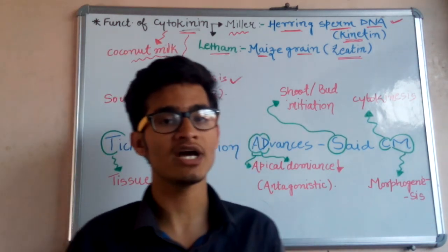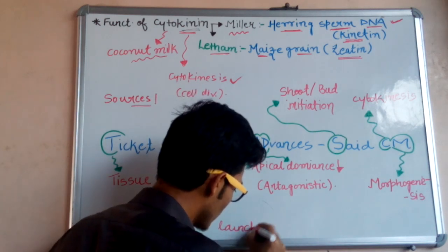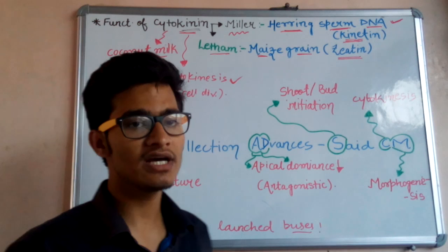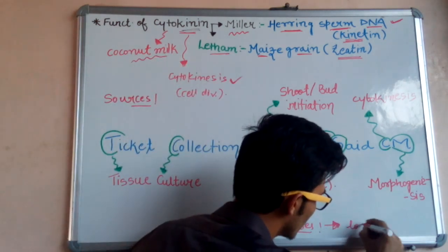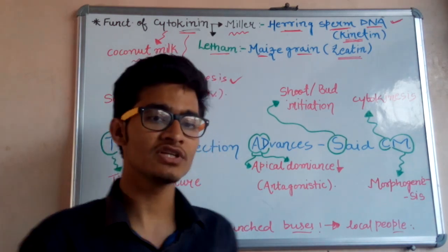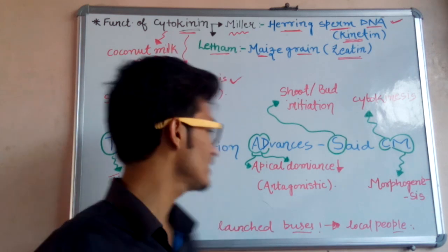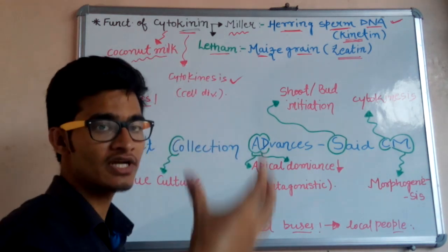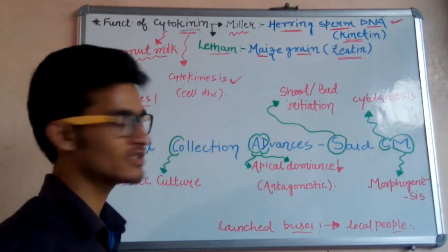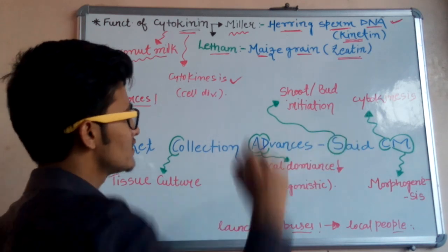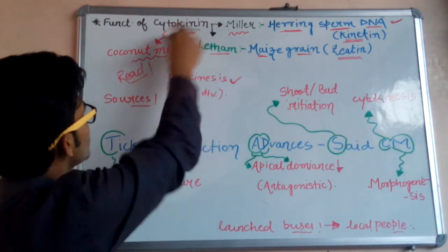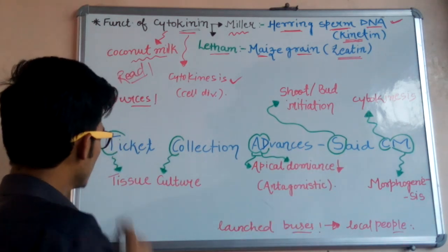For the different functions of cytokinins, I made a trick: 'CM has launched new buses in his area, just to save the time of local people. And due to the advancement in bus services, the advancement of ticket booking also increased.' So the trick is: Ticket Collection Advances Said CM. What does this trick mean and how can we learn all the functions of cytokinins from it? Let's see — 'ticket' simply means T, which stands for tissue.